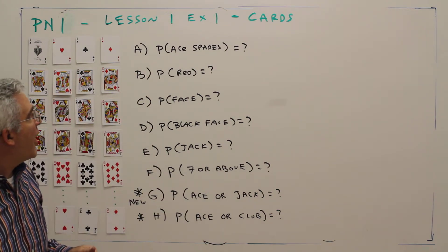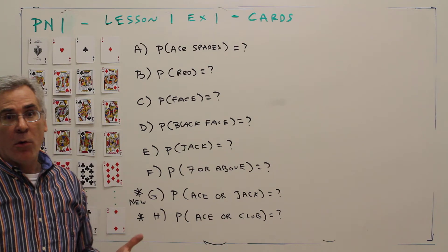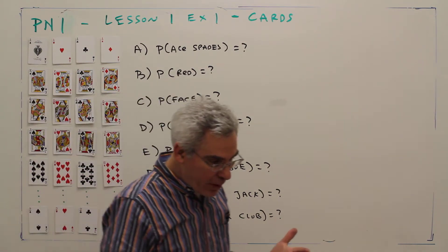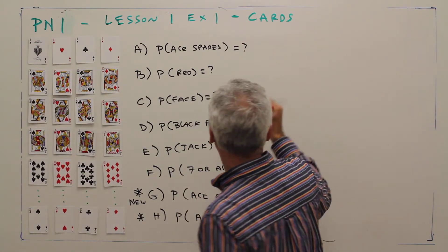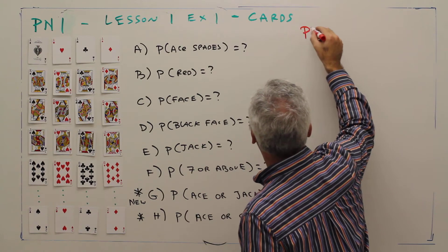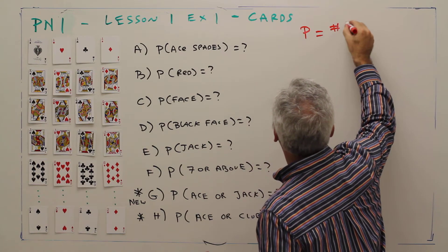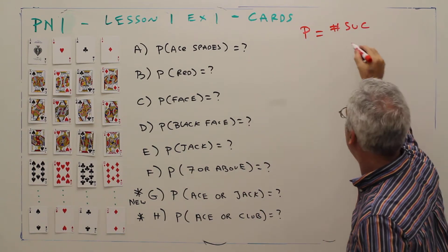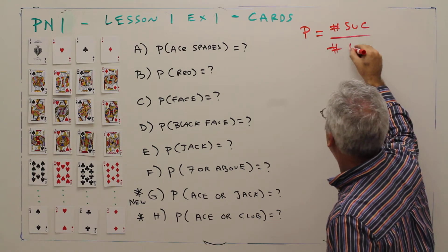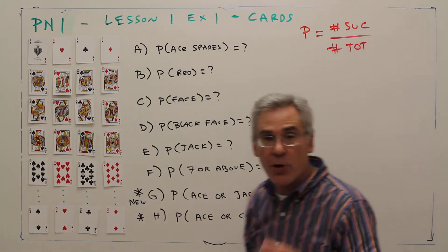What's the probability that it's the ace of spades? Well, the basic probability formula is as follows: Probability equals number of successful outcomes over number of total outcomes.